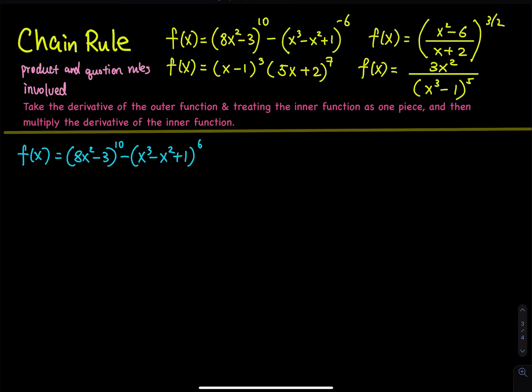More chain rule practice. The first function is f of x equals 8x squared minus 3, raised to the 10th power. This is already one composition function. We have a square inside a 10th power, and then we are subtracting another composition function. So this time we have a third power inside a 6th power. So we have to do one chain rule for each parenthesis.